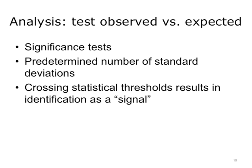After establishing a baseline, the next step is to compare the observed level with the expected level. Statistical significance testing is used to determine whether the observed level significantly differs from the baseline, usually by setting a predetermined number of standard deviations. When the observed level is greater than the statistical threshold, it is referred to as a signal, which may then be investigated further.